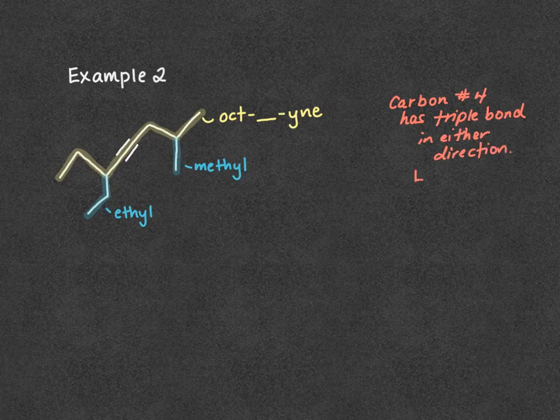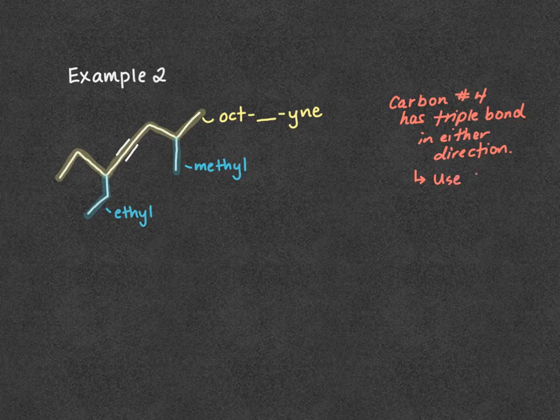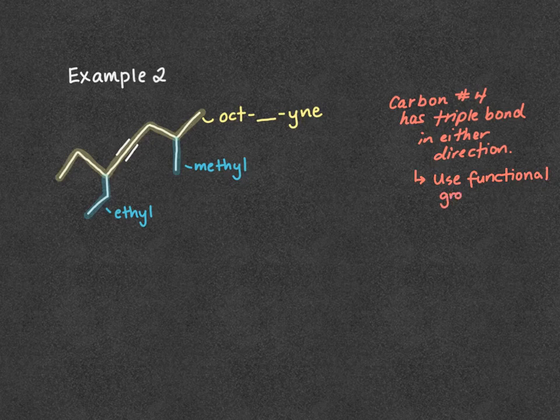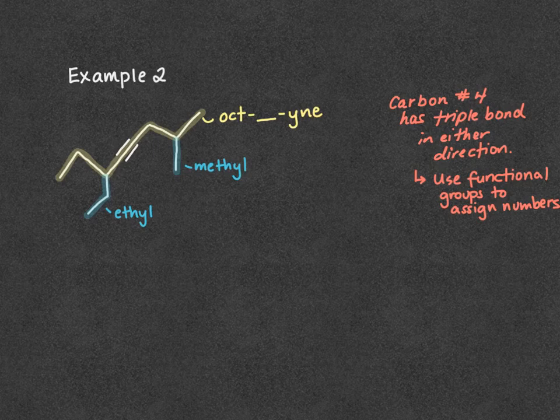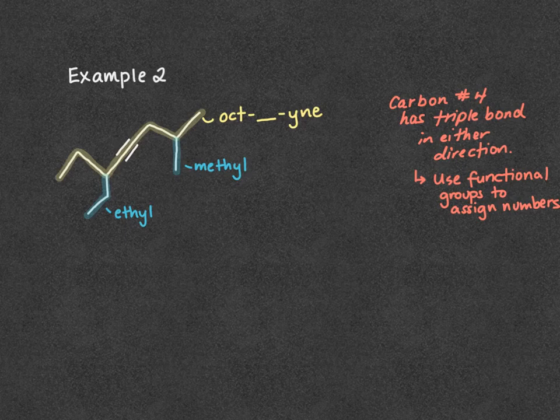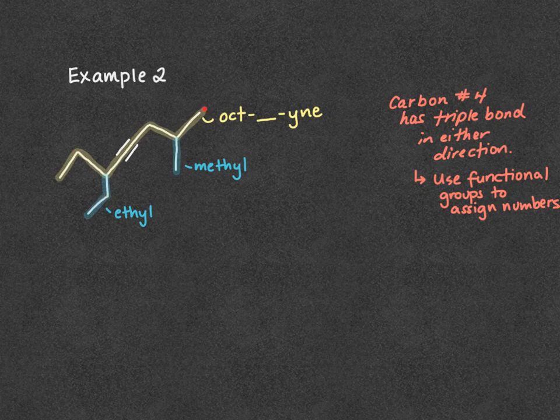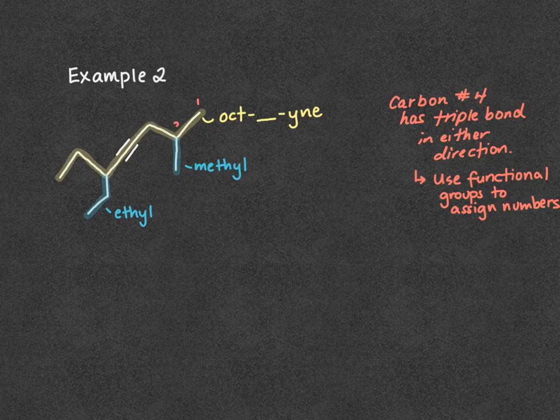Since it's a tie, we're going to use our functional groups to break the tie. Just like we did with alkanes, the direction we number is the first functional group we hit. So if we go from the left to the right, 1, 2, 3, our first branch is on carbon 3. If we go from the right to the left, 1, 2, our first branch is on carbon 2. So we're going to number this molecule from right to left.